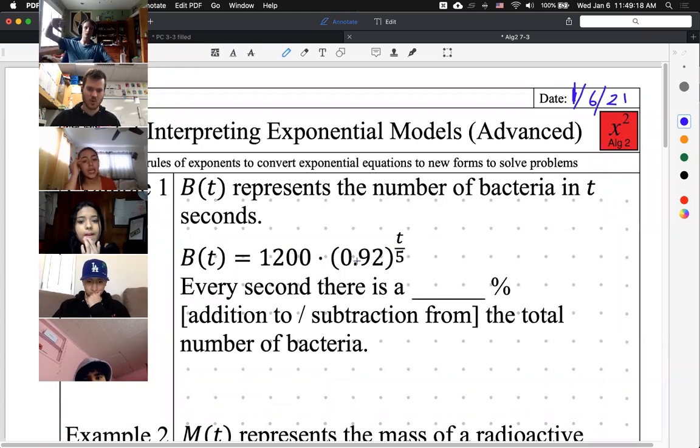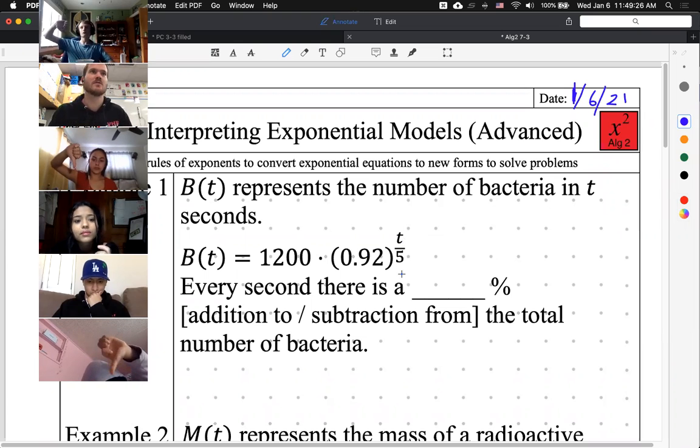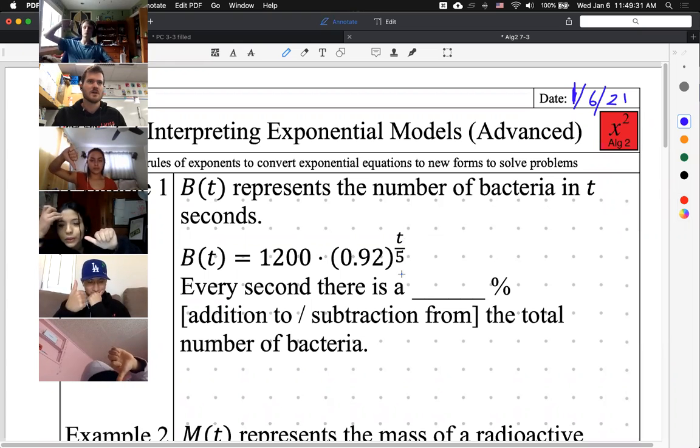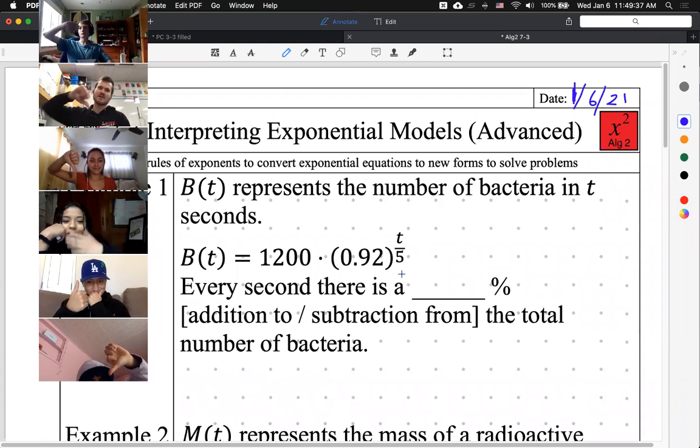Thumbs up or thumbs down. Is this exponential growth thumbs up or is this exponential decay thumbs down? Everyone tell me, is this growth or decay? This equation, 1200 times 0.92 to the power of t over five.